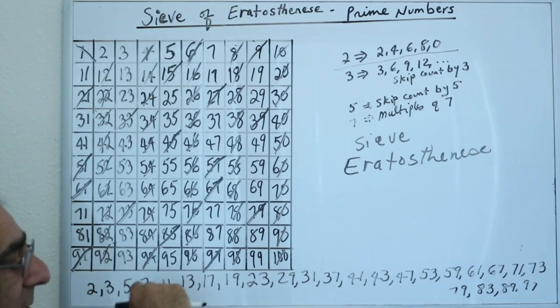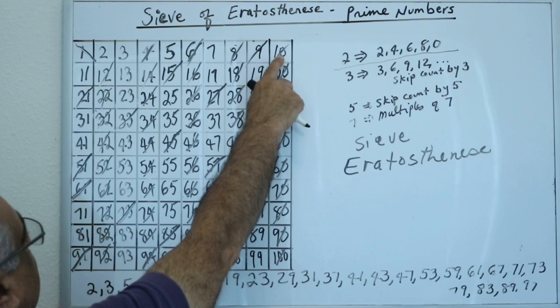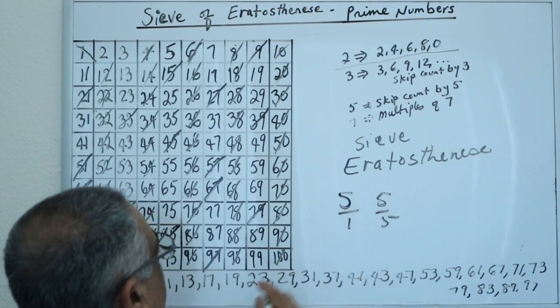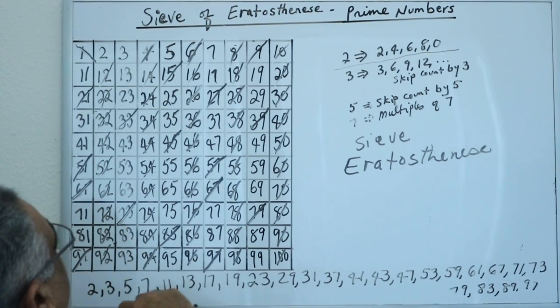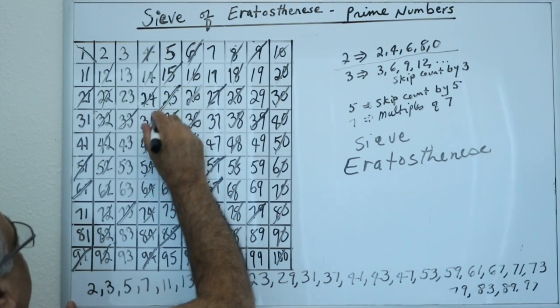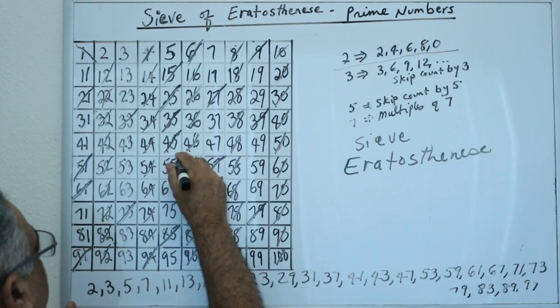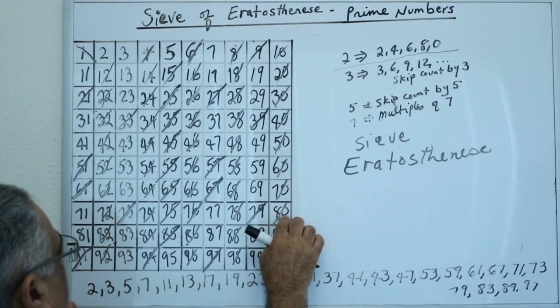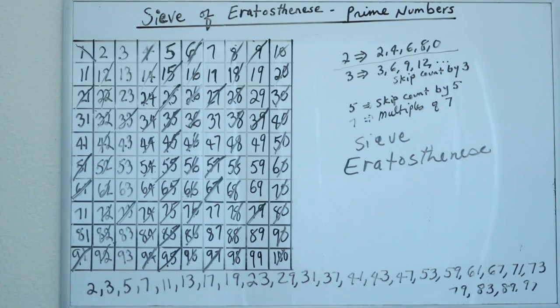And then how about 5. When I look at 5, I'm going to skip count by 5. 5 is a prime number since 5 is divisible by 1 and itself. So leave 5. Then skip count by 5 since 5 is a prime number. 10, 15, 20, 25, 30, 35, 40, 45, 50, 55, 60, 65, 70, 75, 80, 85, 90, 95. So far we eliminated those.